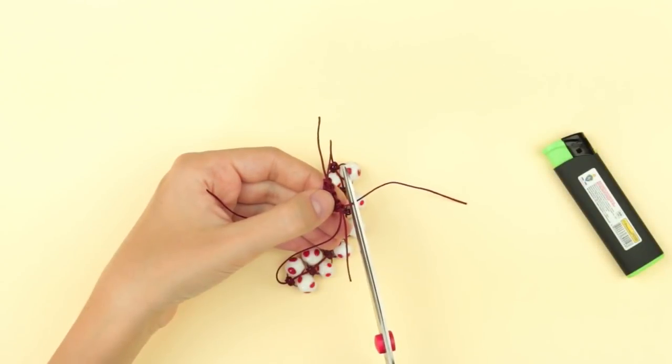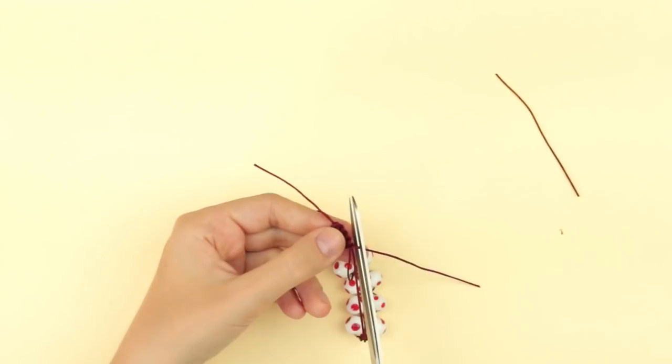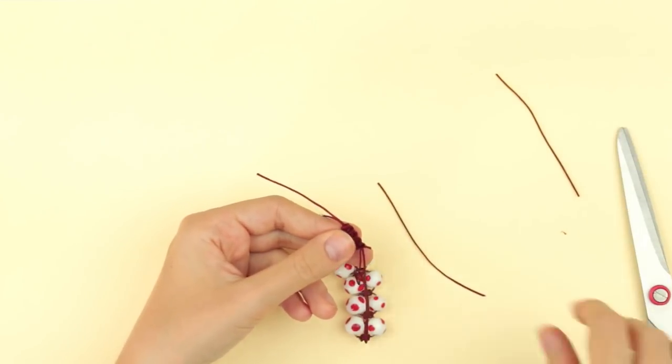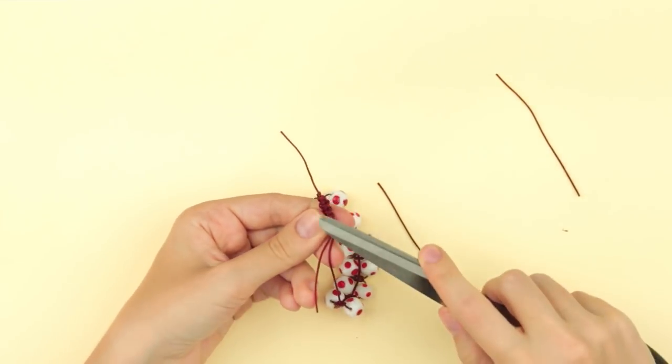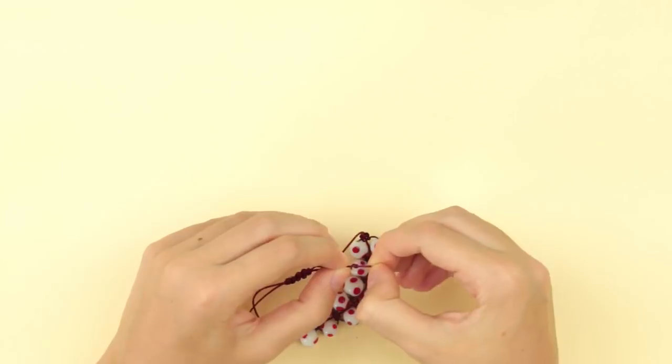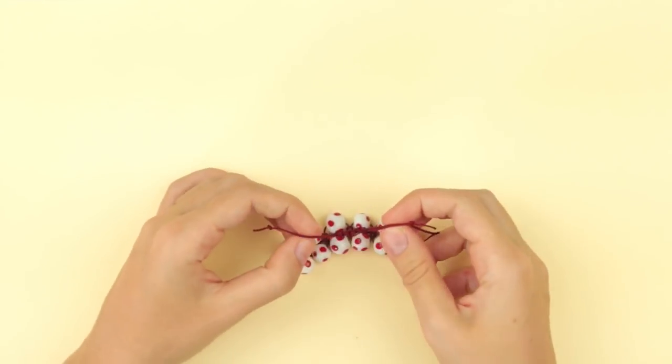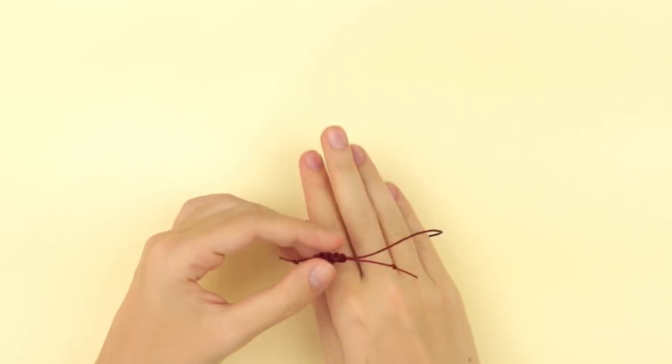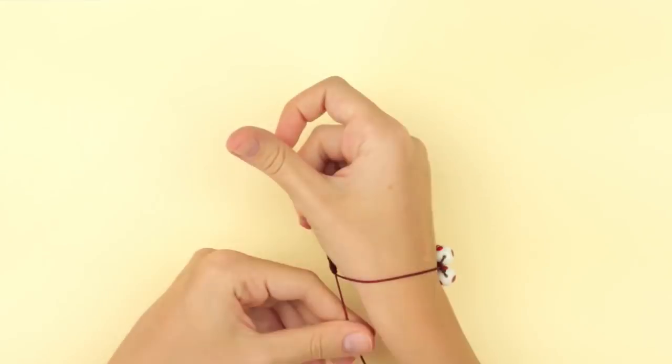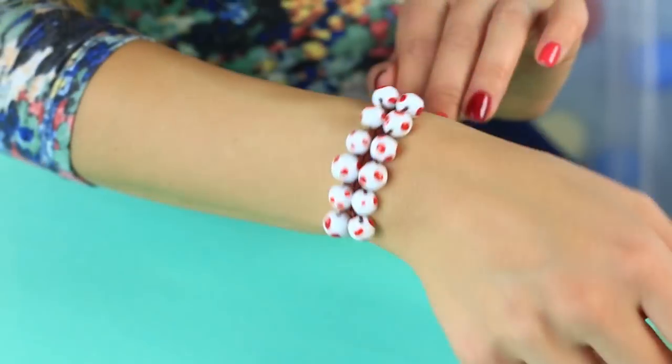Trim the ends of the clasp cord. Melt and fix. Cut off the other cord as well. It's important not to mix up with the base cord. Knot the ends of the base cord and melt with a lighter. Excellent! Let's try it on. Our bright and colorful caterpillar bracelet is ready to bejewell any wrist.